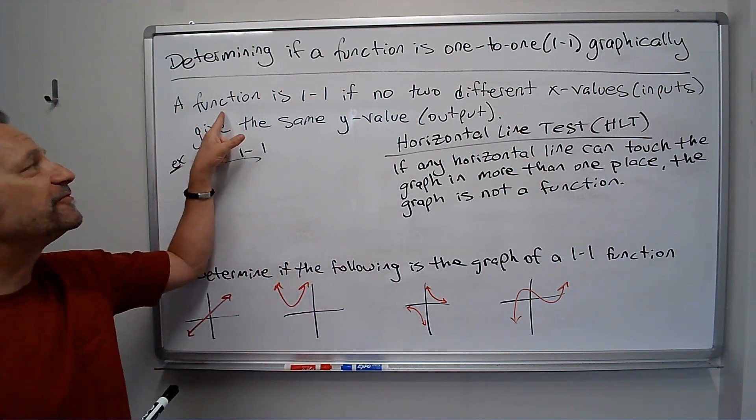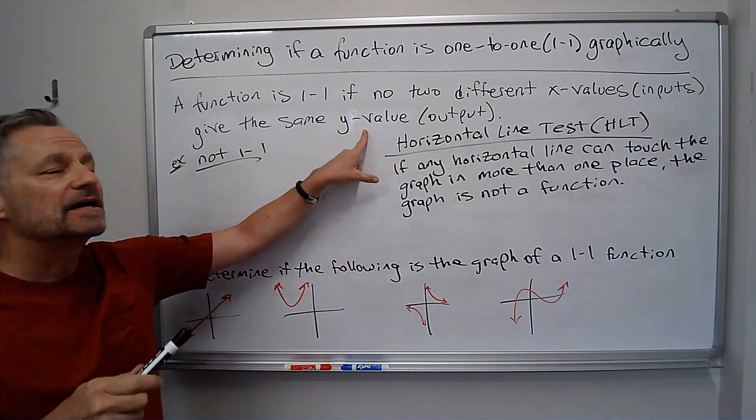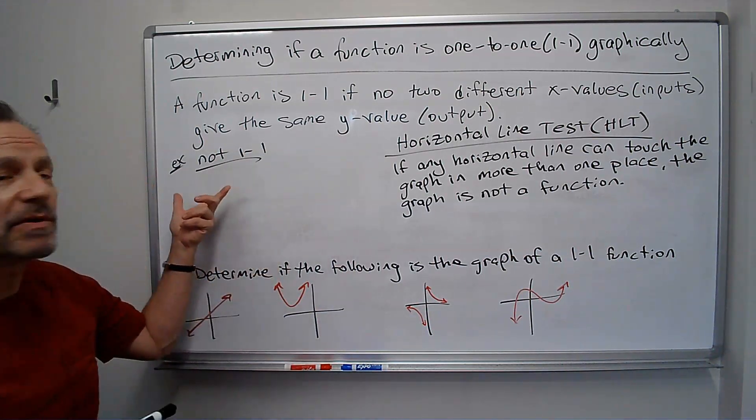To be a function in the first place, each x had to have a different y. Now we're saying we can't have two x's with the same y either to be one-to-one.